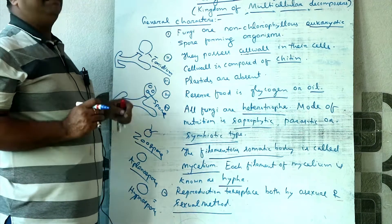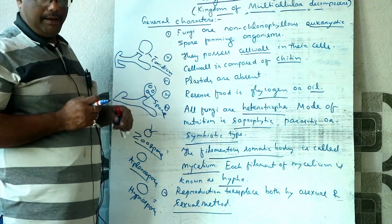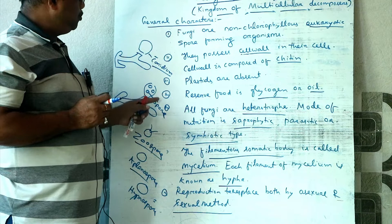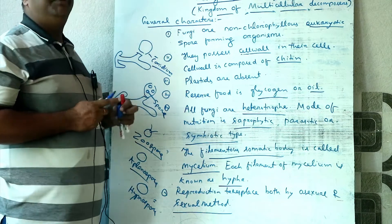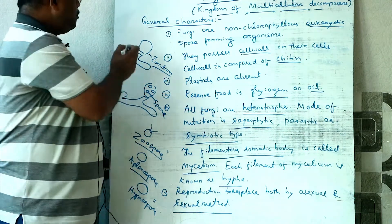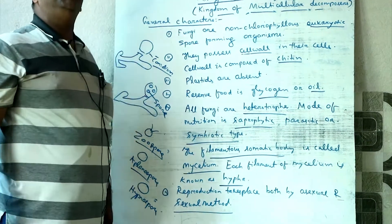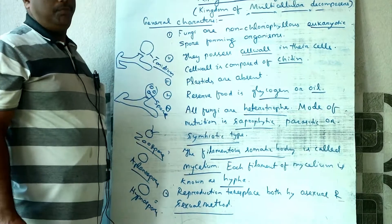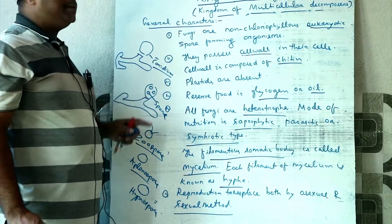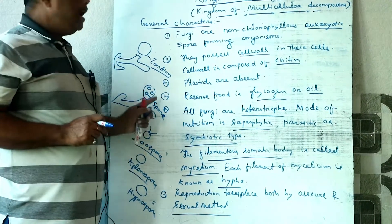Fungi reproduce asexually by spores and conidia. Conidia are asexual spores formed on a specialized hypha called a conidiophore. Spores are formed inside a sporangium, whereas if the sporangium directly detaches, it is called a conidium.